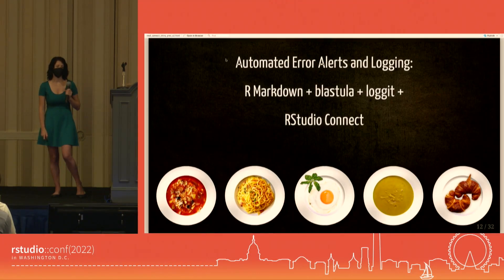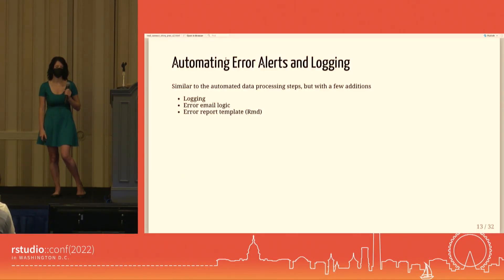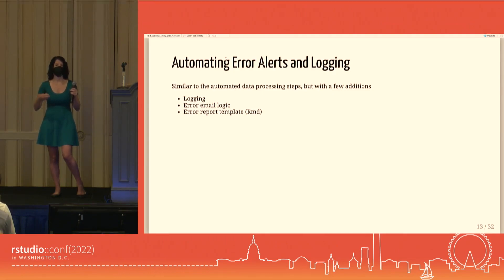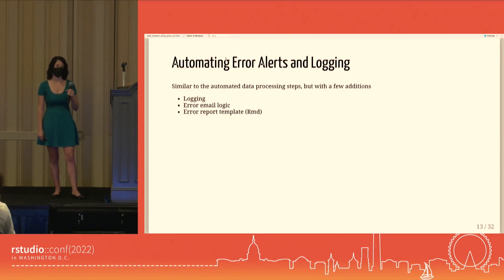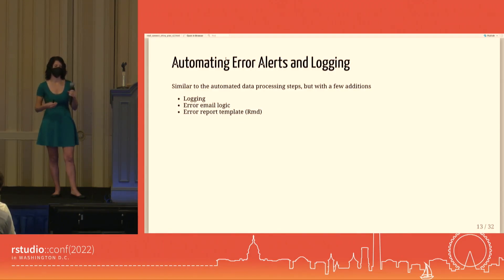The way we implemented error alerts and logging was through a combination of R Markdown, Blastula, Logit, and R Studio Connect. The process was similar to how we automated data processing, except we added a few additional layers: logging, email alert logic, and an error report template in the form of an R Markdown document, which added structure to those email alerts.